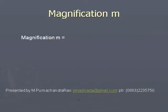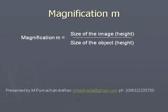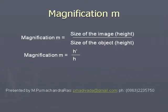Magnification is the ratio of the height of the image to the height of the object. If we represent the height of the object as H, the height of the image as H', and the magnification as m, then m = H'/H.